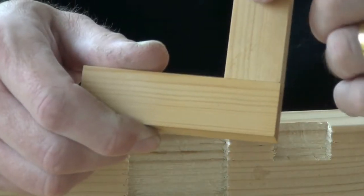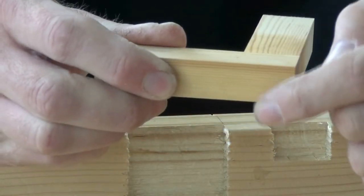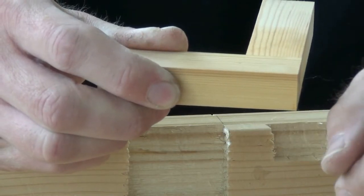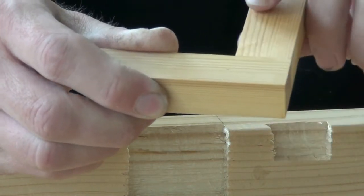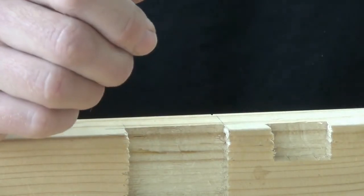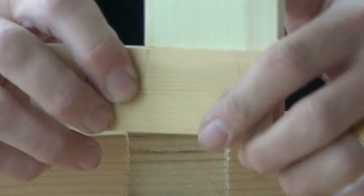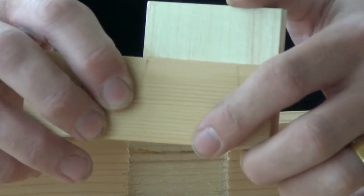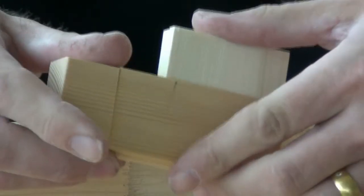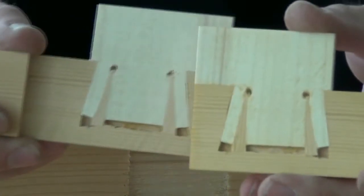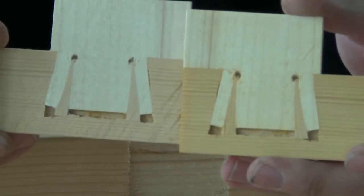A mortise and tenon, where the tenon doesn't come right the way through, is called a stub mortise and tenon. And if you want the wedged strength of a through wedged tenon, but you don't want it to show through, then you can always create what's called a fox wedged tenon.